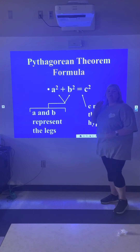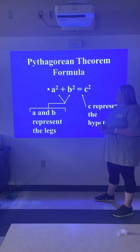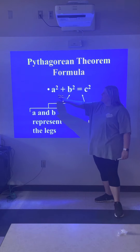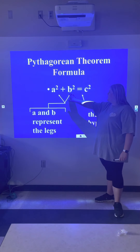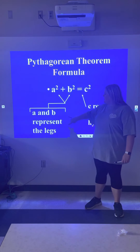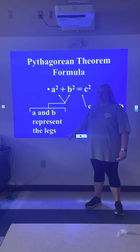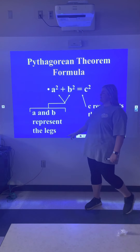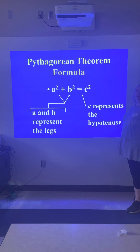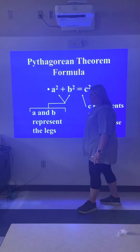The Pythagorean Theorem has a certain formula. The formula is a squared plus b squared equals c squared. Here, a and b represent the legs, and c represents the hypotenuse. Notice everything is squared.